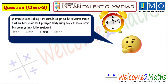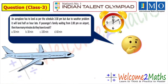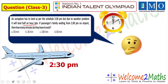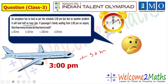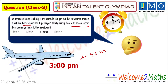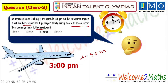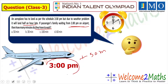The question: An aeroplane is scheduled to land at 2:30 pm, but due to a weather problem it will land half an hour late. Half an hour late means after 30 minutes. So 2:30 pm plus 30 minutes means the plane will reach its destination at 3 pm. Now, if the passengers' family has been waiting at the airport from 2 pm, how many minutes do they have to wait?